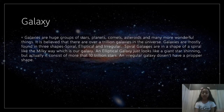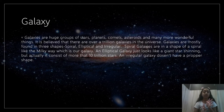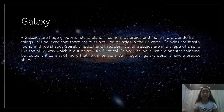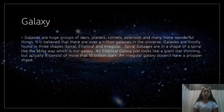Galaxies are huge groups of stars, planets, asteroids, comets and many more wonderful things. It is believed that there are over a trillion galaxies in the universe. Galaxies are mostly found in three shapes: spiral, elliptical and irregular.